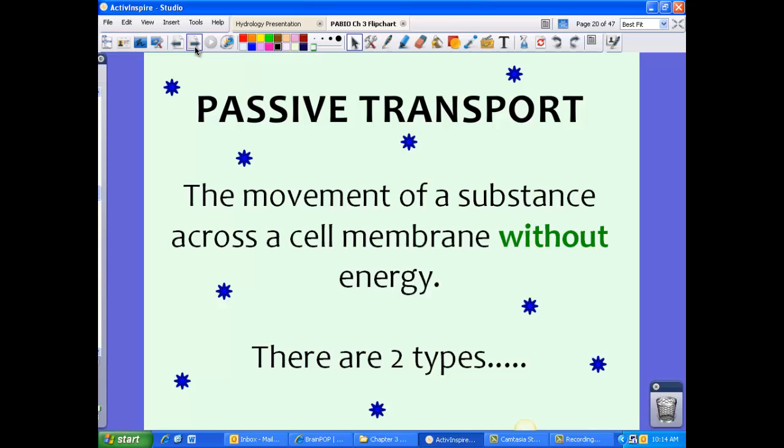We have several types of transport inside a cell. We have passive transport and we have active transport. We're going to specifically talk about passive transport today. Passive transport is just as the name says. It's passive. This is the movement of a substance across a cell membrane without energy. So passive transport does not require energy for things to move from outside to inside the cell or from inside to outside the cell.